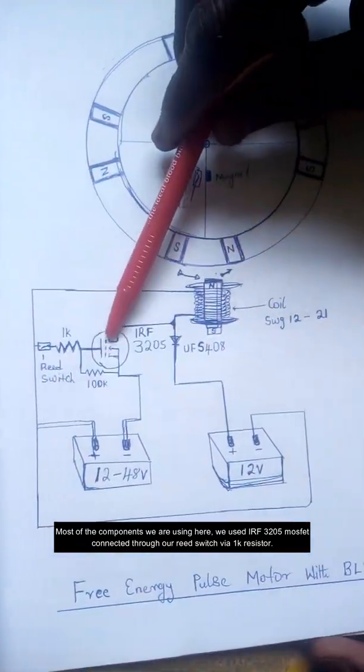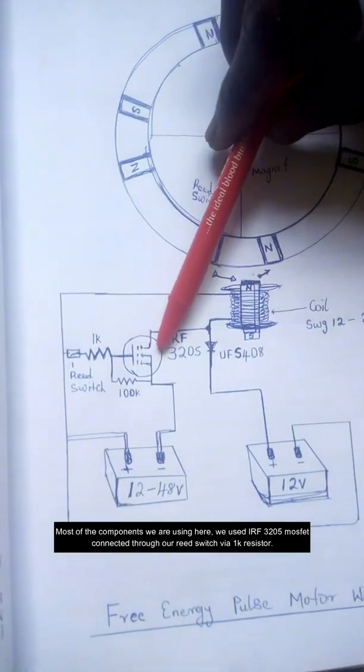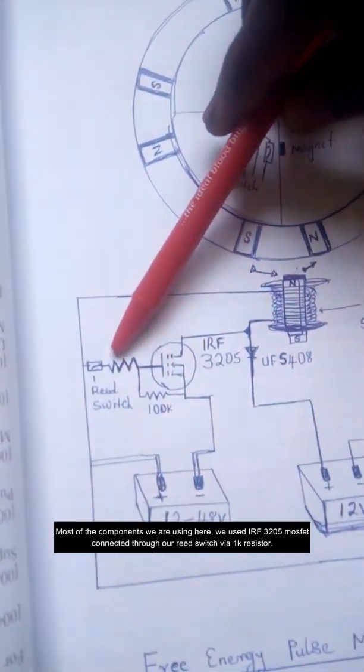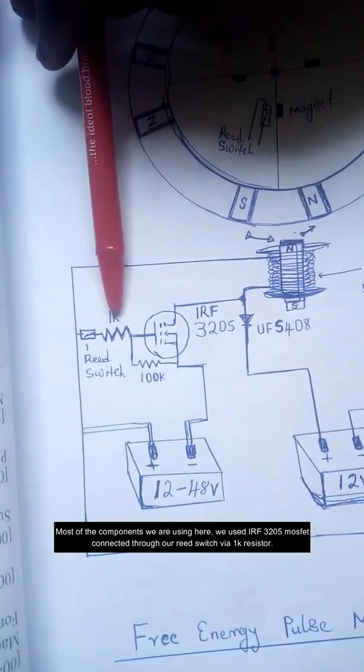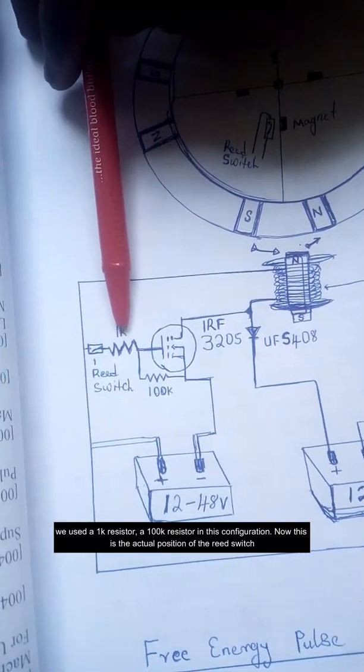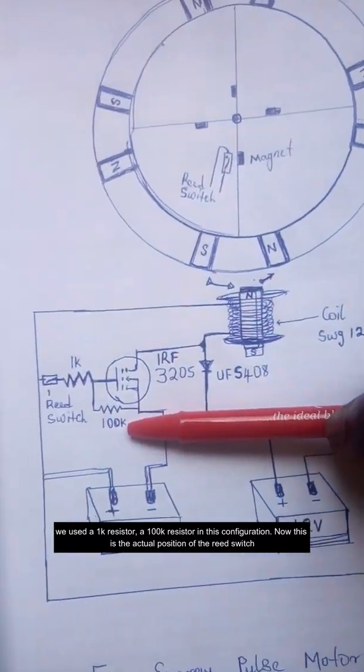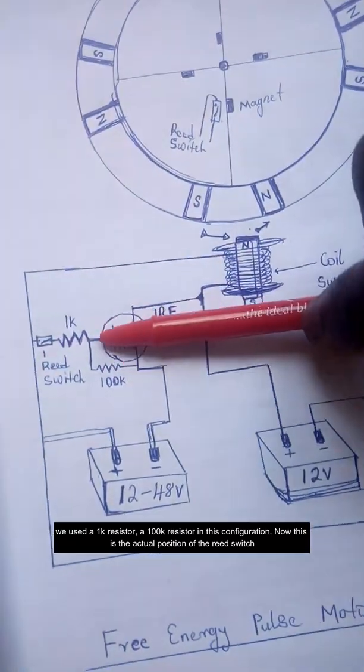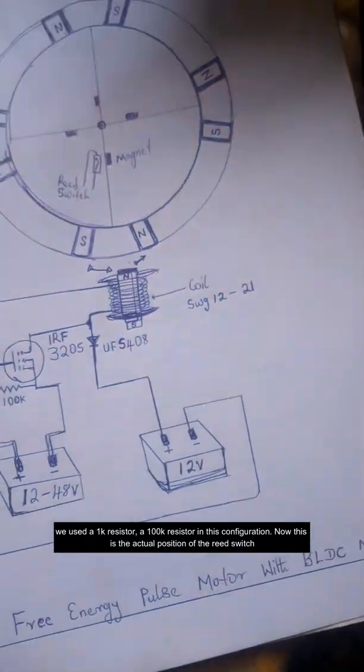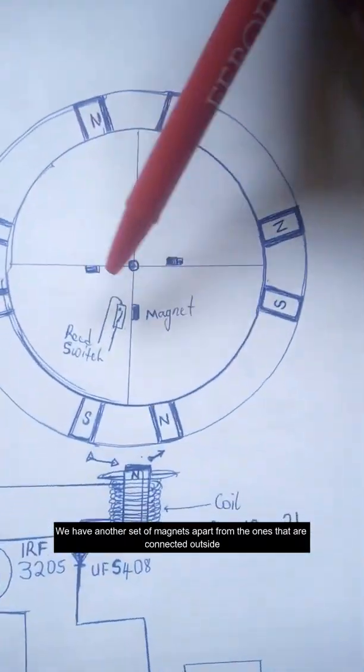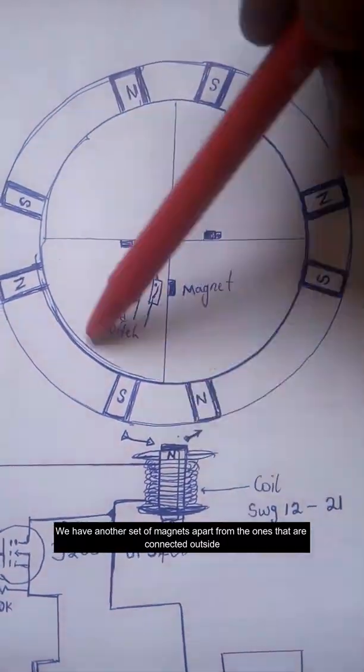We used an IRF3205 MOSFET connected through our reed switch via this 1k resistor. We used a 1k resistor, then a 100k resistor in this configuration. This is the actual position of the reed switch.